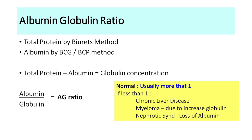In multiple myeloma, immunoglobulin and total protein levels increase while albumin does not, so the AG ratio is low. In nephrotic syndrome, albumin is lost in the urine so albumin levels are low while globulin remains normal, also giving a low AG ratio. Therefore, causes of a low AG ratio include chronic liver disease, multiple myeloma, and nephrotic syndrome. Since albumin is produced only by the liver, chronic liver disease is now diagnosed when serum albumin is less than 3.2 grams per deciliter.